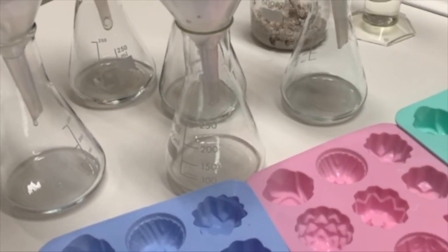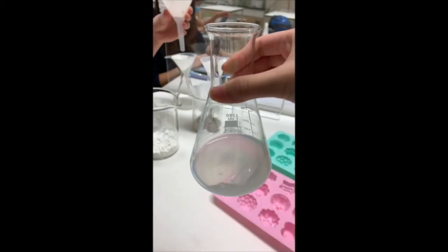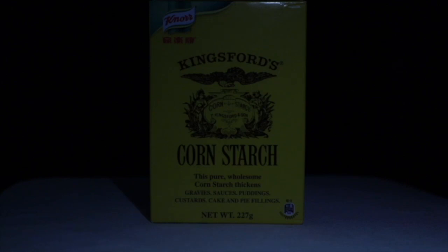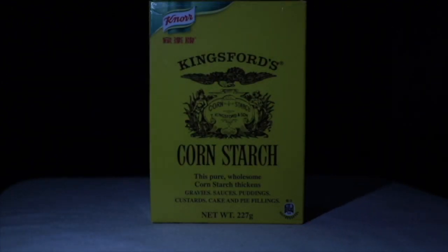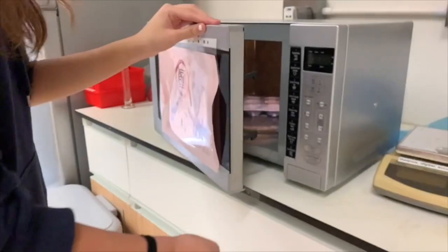Then, chitin is converted into its derivative chitosan through chemical deacetylation using sodium hydroxide. Calcium salt residue in the chitosan can be separated by filtration. Since chitosan is fragile, an additional polyol, cornstarch, is added to enhance its frictional properties and mechanical strength in order to prevent it from falling apart, creating a plastic-like complex.